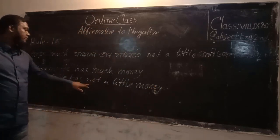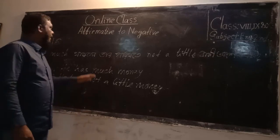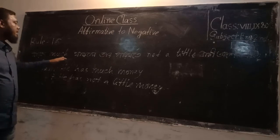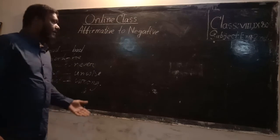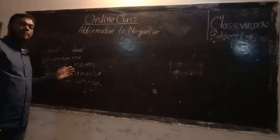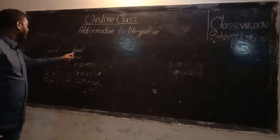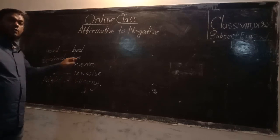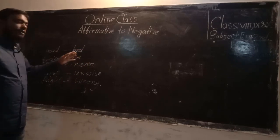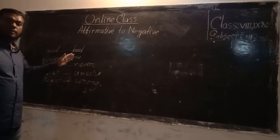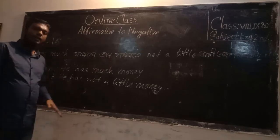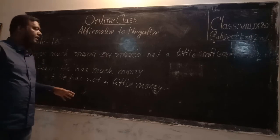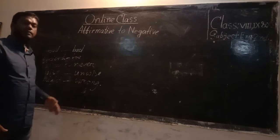I hope you have understood. I will show you some words used in affirmative-to-negative transformation, such as: good/bad, painful, always/never, wise/unwise, right/wrong, and so on. There are many such antonym pairs. Well, students, if you feel any problem or don't understand anything, please put a comment in the comment box. Thanks for today — see you again with another lesson. Thank you all.